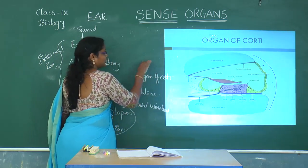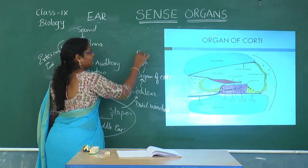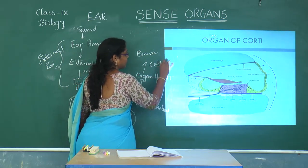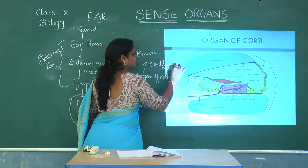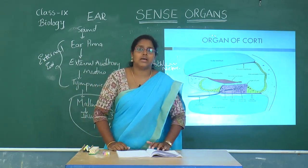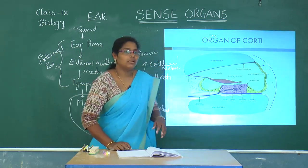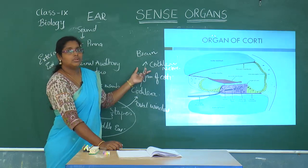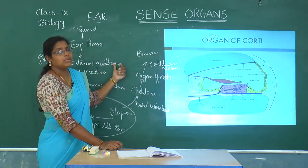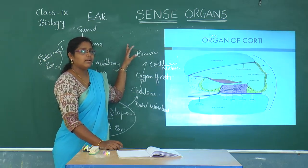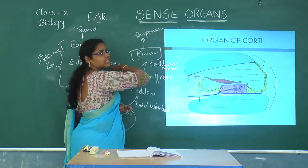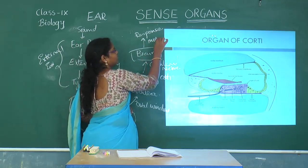From the organ of Corti in the cochlea, impulses are carried to the brain through the cochlear nerve. The cochlear nerve joins with the vestibular nerve — coming from the vestibule and semicircular canals — to form the auditory nerve, which transmits information to the brain where a motor response is generated.